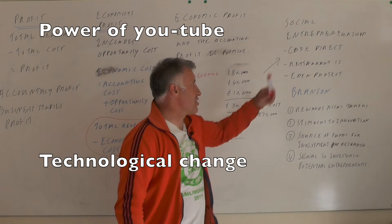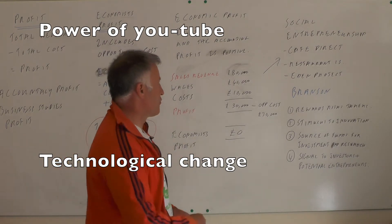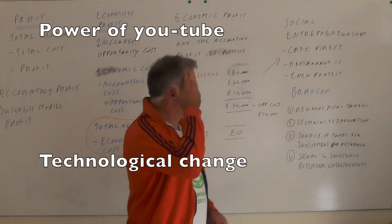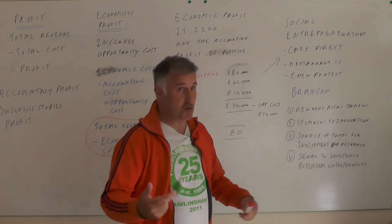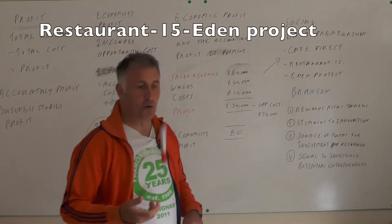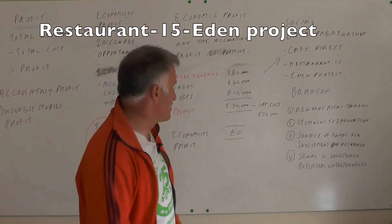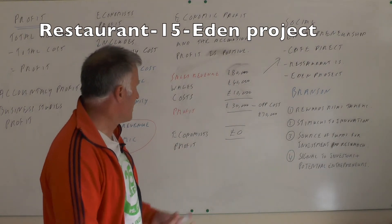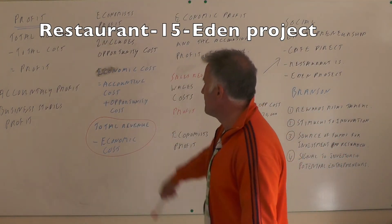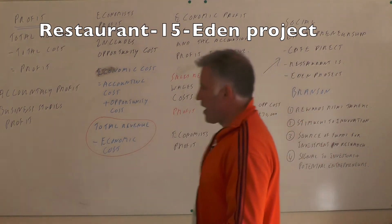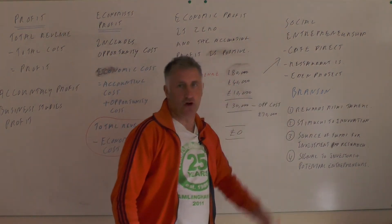Examples of social entrepreneurship include Cafe Direct, and Restaurant 15 set up by Jamie Oliver — a great guy who wants people to eat healthy food and helps those who aren't going anywhere by showing them they can run a restaurant. There's also the Eden Project in Cornwall. Social entrepreneurship is a really interesting subject. To summarise: we have business or accountancy profit, economic profit, the role of profit, and social entrepreneurship.